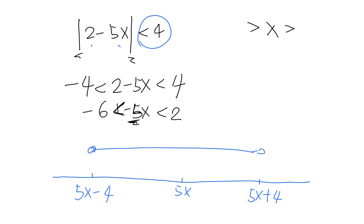Right. Okay, so here we have negative 2 over 5 and 6 over 5.